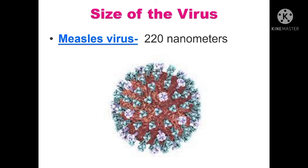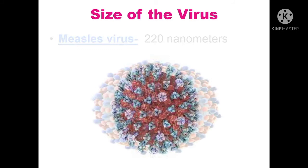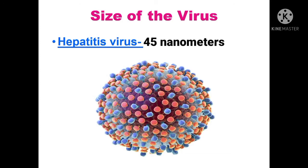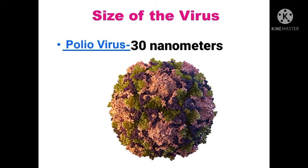Now let's talk about the size of viruses. The measles virus has a diameter of 220 nanometers. The hepatitis virus has a diameter of 45 nanometers. The poliovirus has a diameter of 30 nanometers.